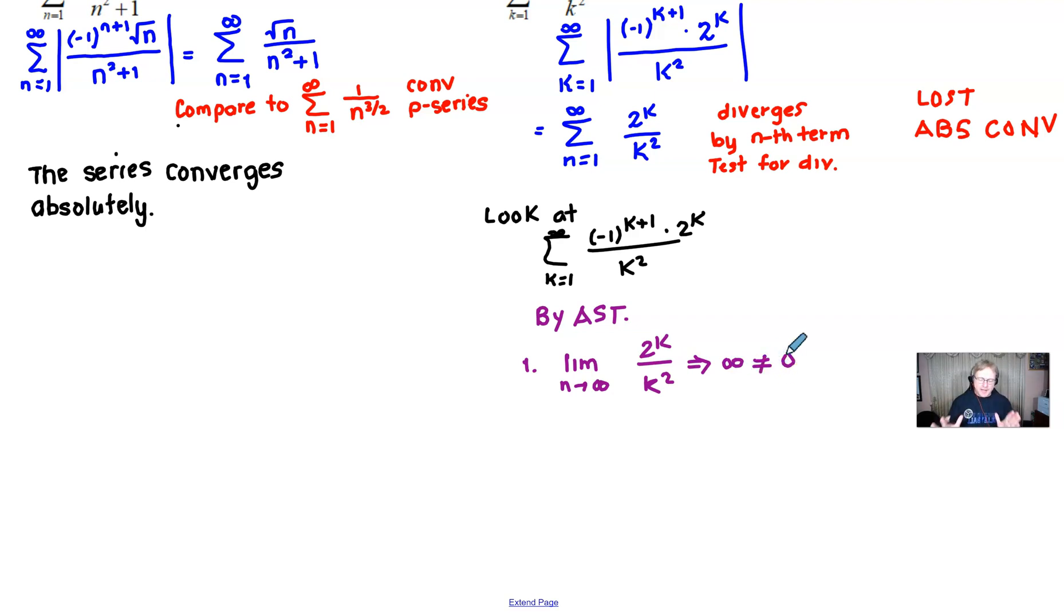Hey infinity is not equal to 0. So by the fact that this limit is something other than 0 that means we've got divergent behavior according to the alternating series test. And then what that means is that this original series in the problem diverges and that's how it works guys.